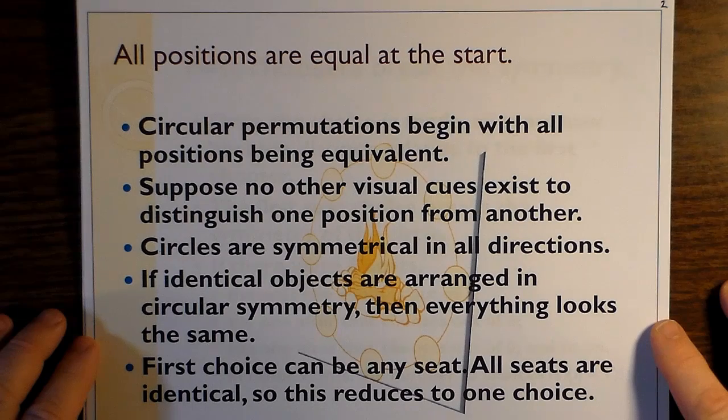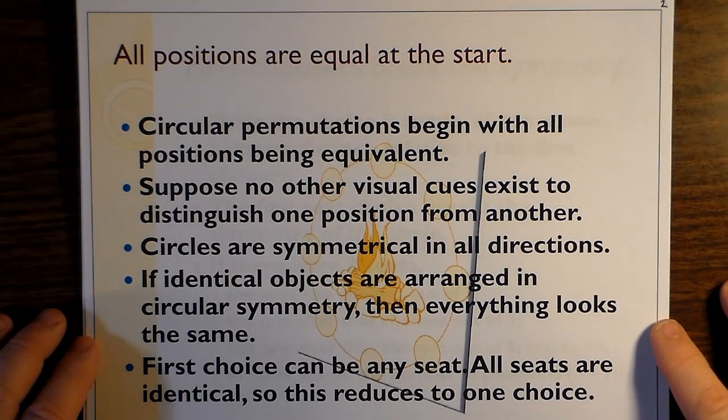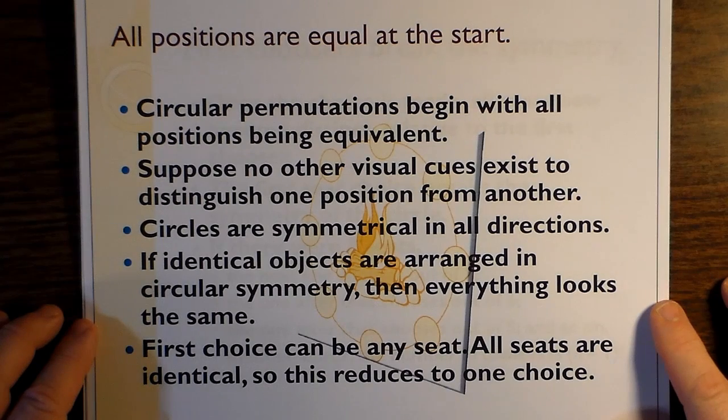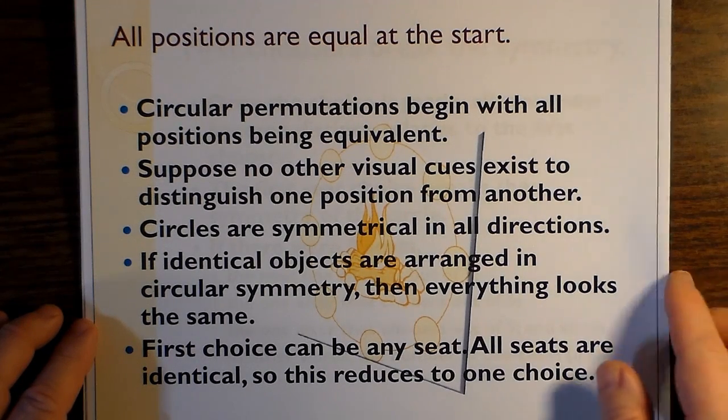Circles are symmetrical in all directions. If identical objects are arranged in circular symmetry, then everything looks the same. First choice can be any seat. All seats are identical, so this reduces to one choice.